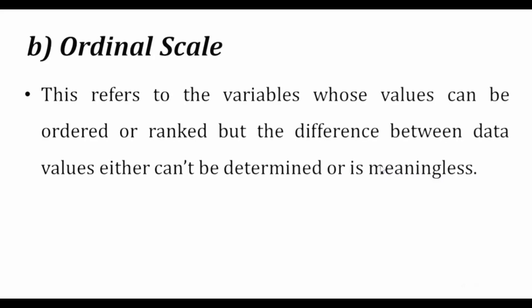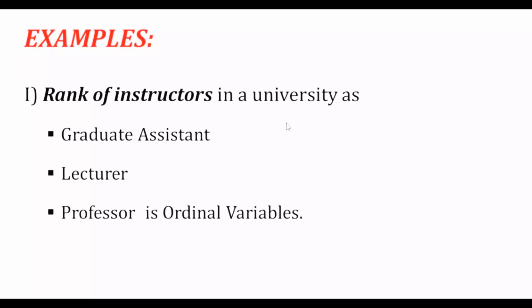The ordinal scale has the property of order — variables are ranked. For example, lecturer, graduate assistant, assistant professor, and professor have an order. However, the distance between ranks is undefined and not fixed, and there is no fixed zero in the ordinal scale.